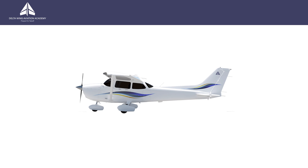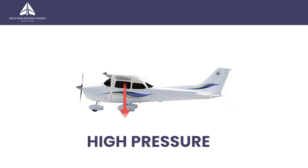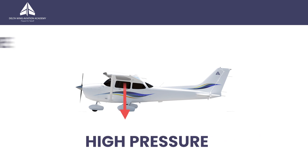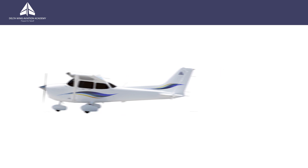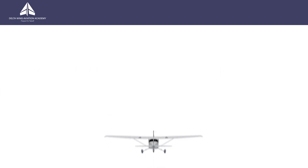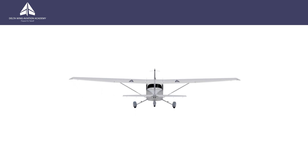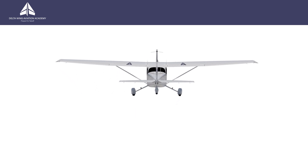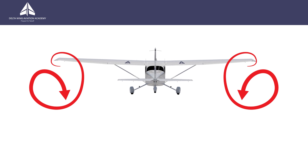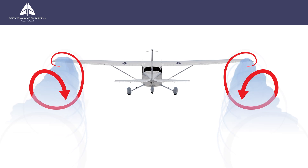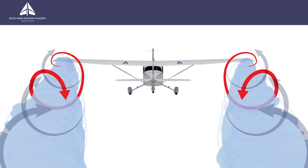When a wing is producing lift there is a relatively high pressure region below the wing and a relatively low pressure region above the wing. It is this pressure difference that holds the aircraft up during flight. However, airflow is inherently three-dimensional and air tends to flow from high pressure regions to low pressure regions. Because of this, if we change our perspective from the side view to the rear view, we can see that the air will flow around the wingtips from below to above. It is this flow that creates the wingtip vortices.